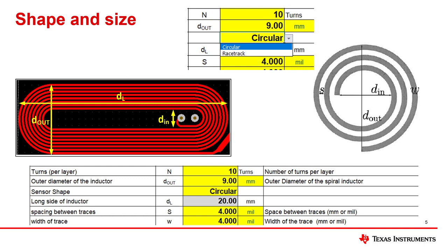The number of turns per layer determines how many times the coil will wrap around — the more turns, the smaller the inner diameter. If too many turns are entered, the tool will provide a warning. The outer diameter is usually determined by the space available for the sensor coil or by the distance between the sensor and the target. The spacing between traces and the width of the traces are shown in the circular coil as S and W respectively. These parameters may be limited by the PCB manufacturing process; 5 mm is a common value.